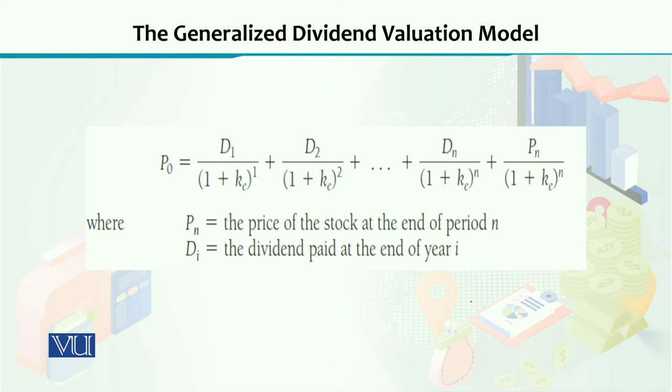We need three things: first, the dividends you are going to receive every year; second, the expected rate of return for every year or for how many time periods you have assumed for this particular investment; and third, we use the generalized dividend valuation model to calculate the present value, which requires the future selling price at the end of the period.